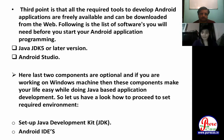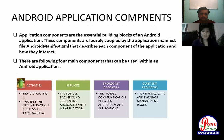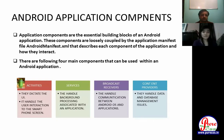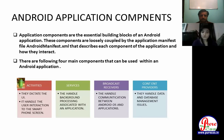Android application components are the essential building blocks of an Android application. These components are loosely coupled by the application manifest file AndroidManifest.xml, which describes each component and how they interact. There are four main components: Activity — which dictates the user interface and handles user interaction on the smartphone screen; Services — which handle background processing; Broadcast Receivers — which handle communication between the Android OS and other applications; and Content Providers — which handle data and database management.